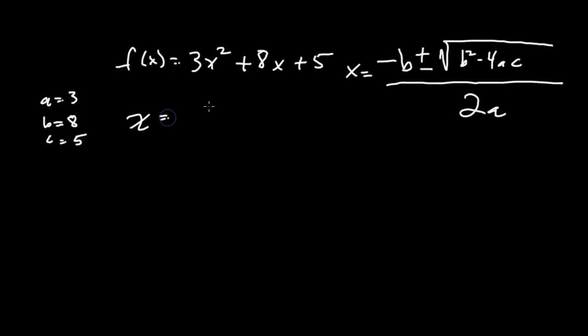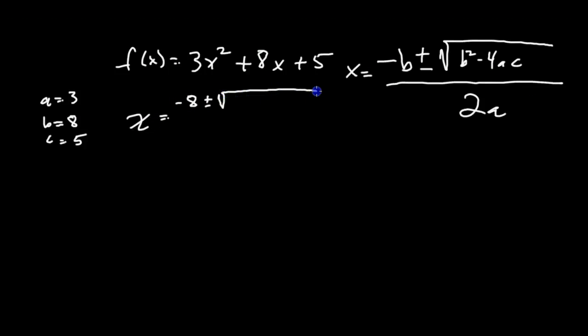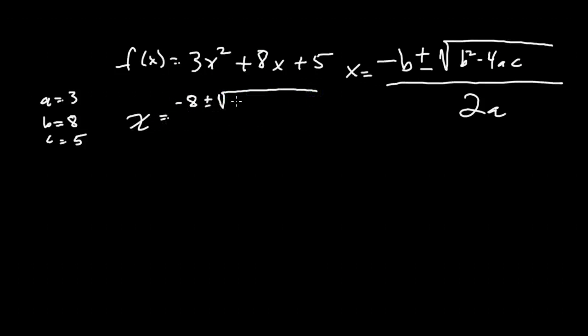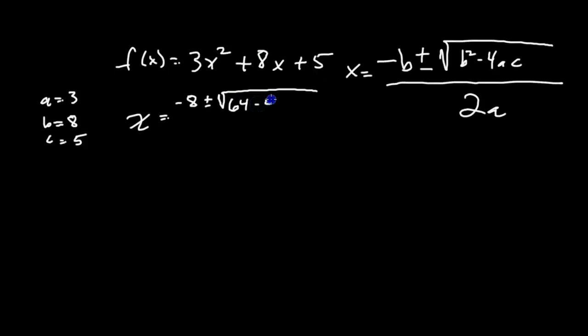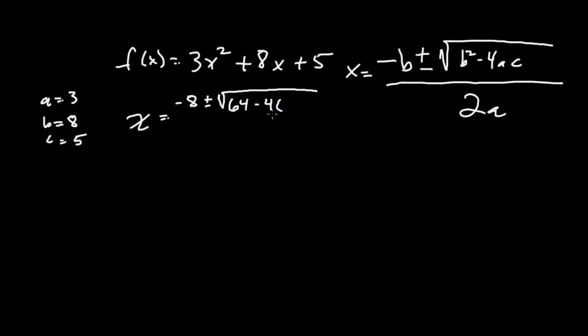So in our case, x is going to be equal to the opposite of 8, which is negative 8, plus or minus the square root of 8 squared is 64 minus, and let's do this piecemeal here. So 4 times a, which is 3, times c, which is 5.